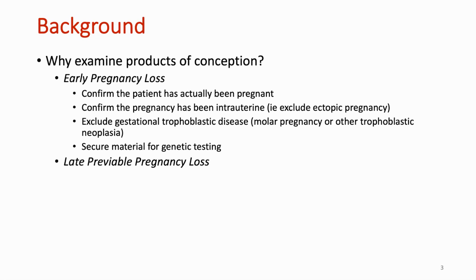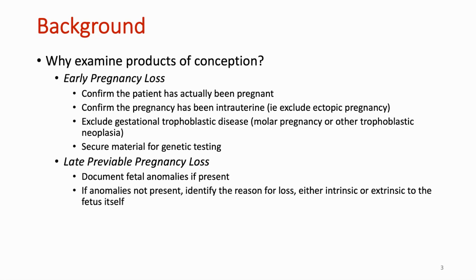For late previable pregnancy loss, which we can define as between 14 and 24 weeks gestation, we want to document fetal anomalies if present and suggest or identify the underlying fetal disorder if present. If there are no fetal anomalies present, then we try to identify the reason for the loss — this may be intrinsic to the fetus itself or extrinsic, such as due to factors involving the intrauterine environment. Late previable losses tend to overlap more with premature births, so for the purposes of this talk, I'm going to focus more on early pregnancy loss.